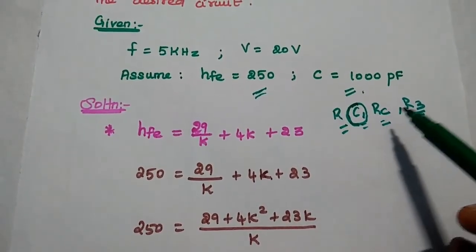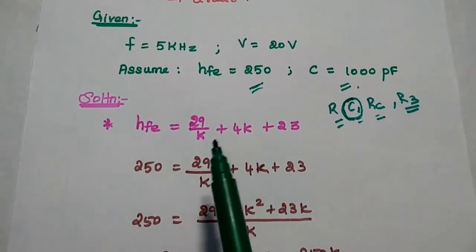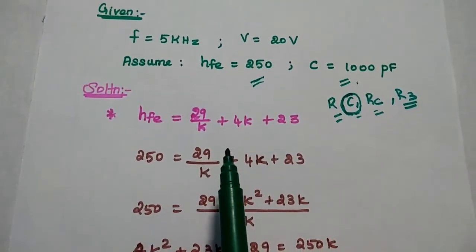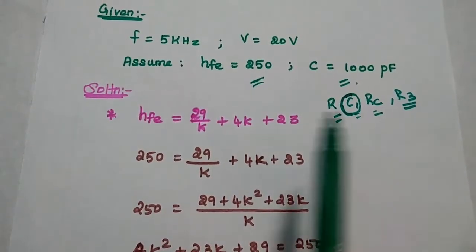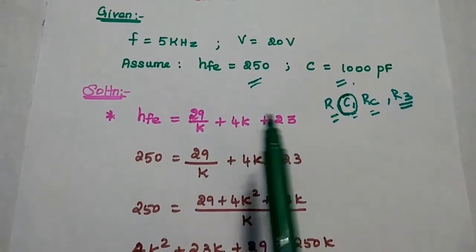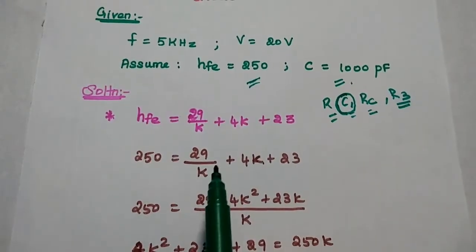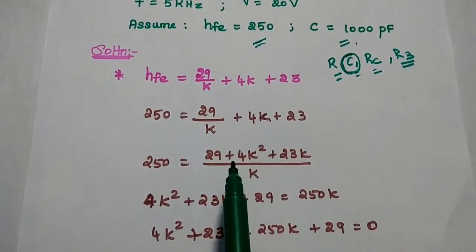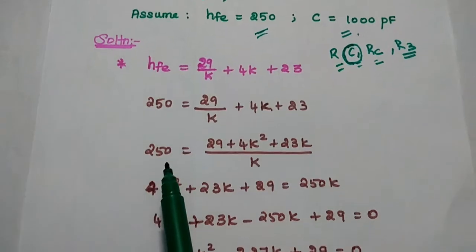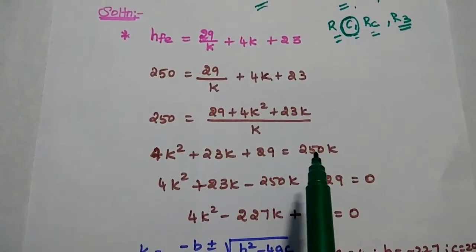We have to find R, RC, and R3. The first step is to find the value of K. From K we can get the resistance as well as RC and R3 values. The formula is: HFE = 29/K + 4K + 23. Substituting HFE = 250 and simplifying: 4K² + 23K + 29 = 250K.